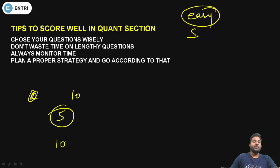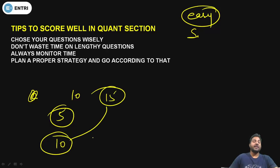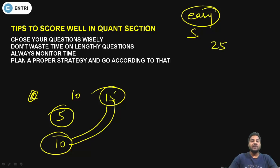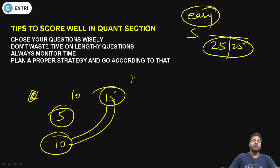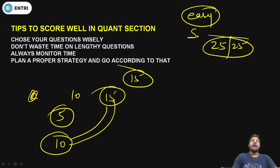Let's say you solve 10 questions in 5 minutes — you're left with 10 minutes and 15 questions remaining, which gives you a good chance to solve all 15. So you can easily solve 25 out of 25 in the apprenticeship exam. Plan accordingly, because you will have only 15 minutes per segment. I hope you have understood these tips.